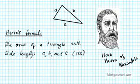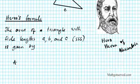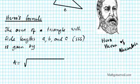So the area of a triangle with side lengths A, B, and C, SSS, is given by A equals the square root of S times S minus side length A times S minus side length B times S minus side length C.